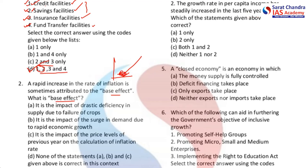The base effect is how the base is performing when compared to the present scenario. The options are: A, it is the impact of drastic deficiency in supply due to failure of crops; B, it is the impact of surge in demand due to rapid economic growth; C, it is the impact of price levels of the previous year on the calculation of inflation rate. Because how the price levels of the previous year impact the present year's price levels, the answer is C.